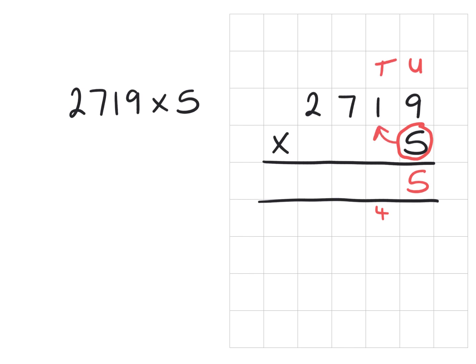Then we're going to look at 5 lots of 10 or 5 lots of 1, 1 lot of 10, which is 5. Don't forget to circle our carry over. So that's going to give us 9 tens all together.